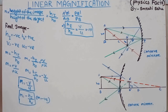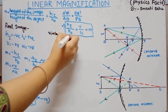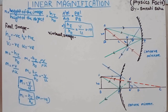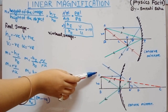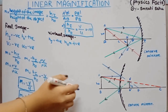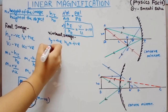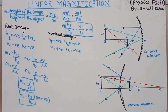Now we go to the virtual case. In case of a virtual image, the virtual image is always erect. So HI is positive and HO is also positive according to sign convention. Object distance is negative and image distance is positive. The sign convention is already discussed in our previous video — the link is in the description box.